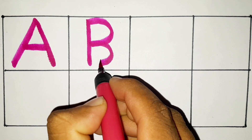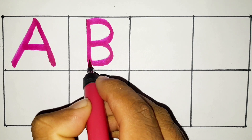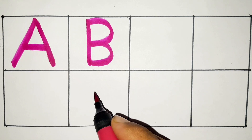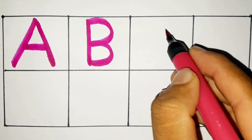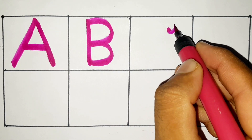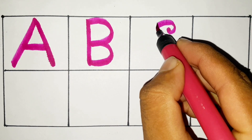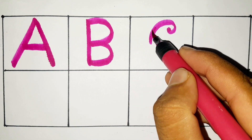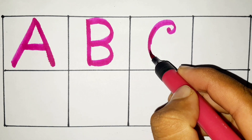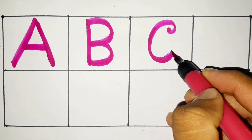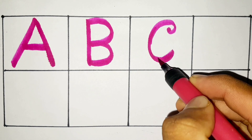N, O, P, Q, R, S, T, U, V, W, X, Y, and Z. Now I know my ABCs, next time won't you sing with me?